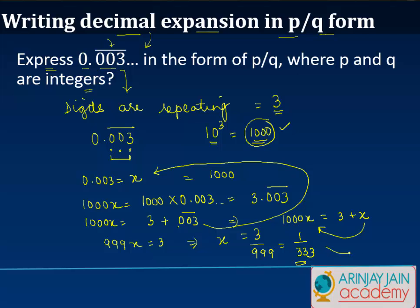And thus we have mentioned this number in the form p upon q where for 1 upon 333, p is equal to 1, q is equal to 333, and both these numbers are integers. So we have expressed a given decimal expansion in a form of p by q where these p and q are integers. You can do similar thing for other cases also.